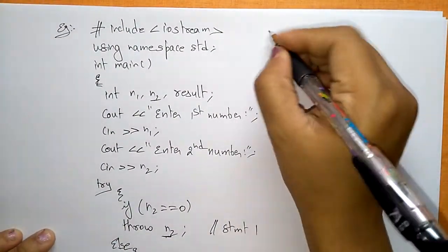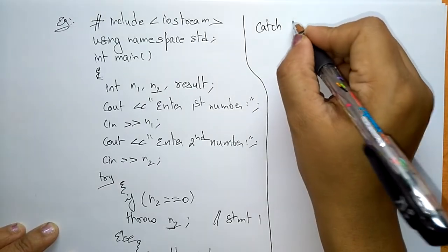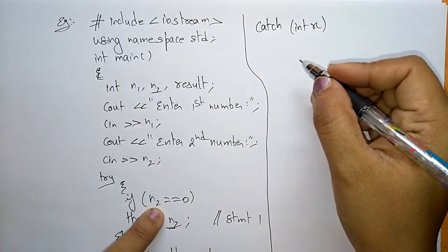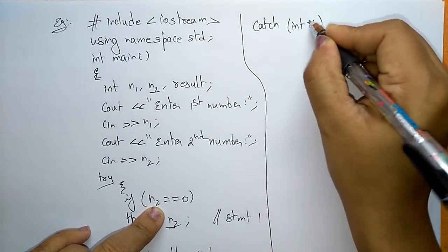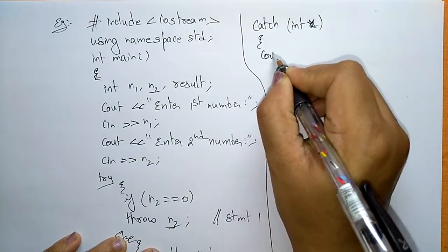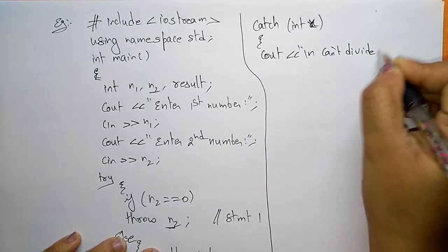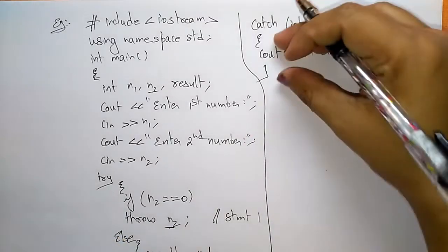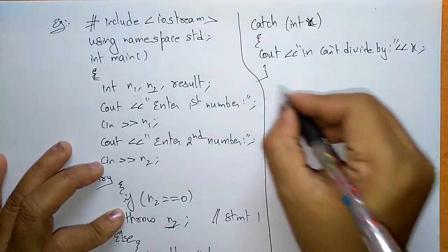Here I am writing catch(int x) — since n2 was declared as integer, I use x as the parameter. Inside the catch block: cout 'can't divide by' and then prints x. The catch block closes, the try block is also closed, and back in main I print cout 'end of the program'.